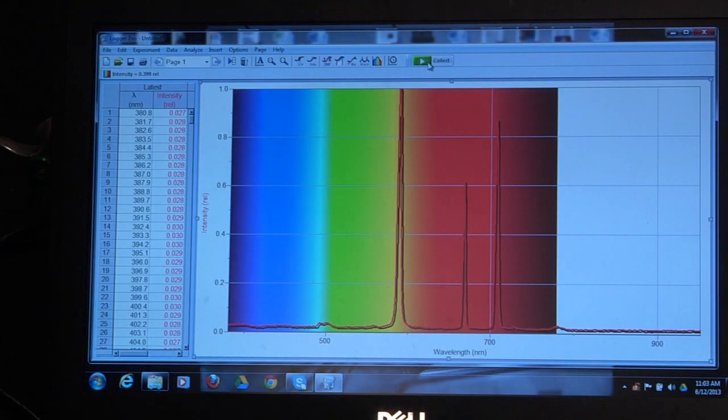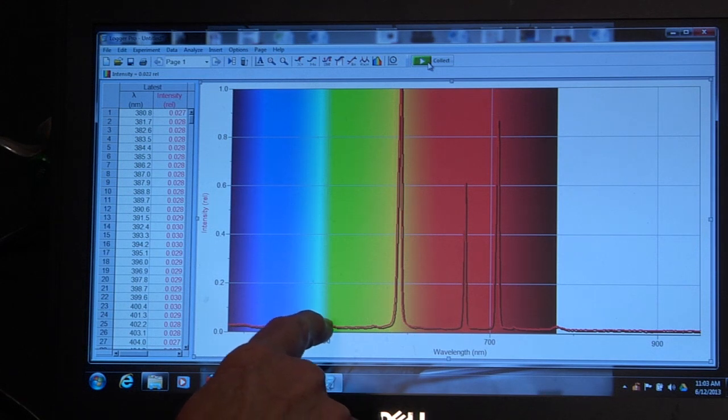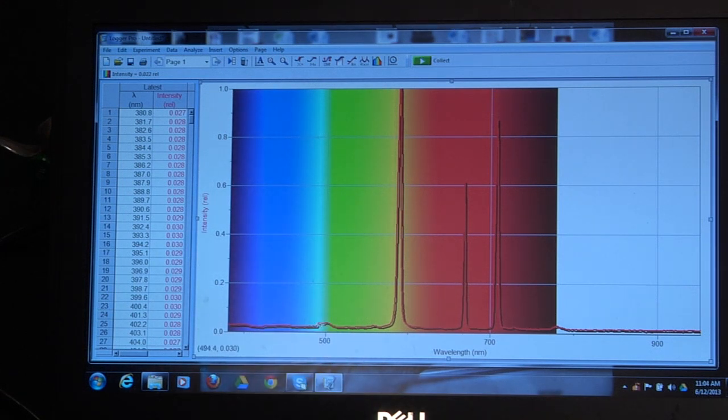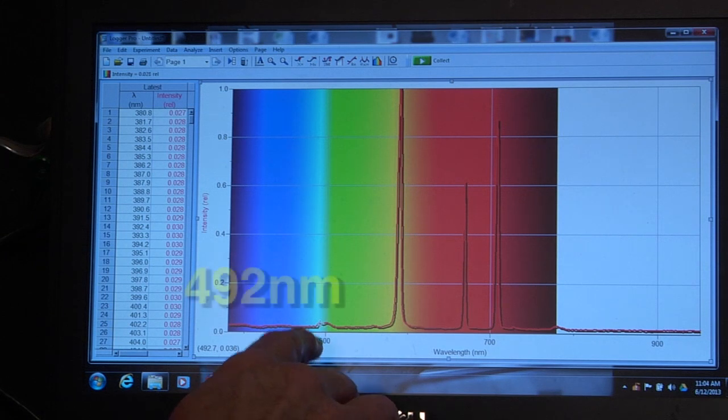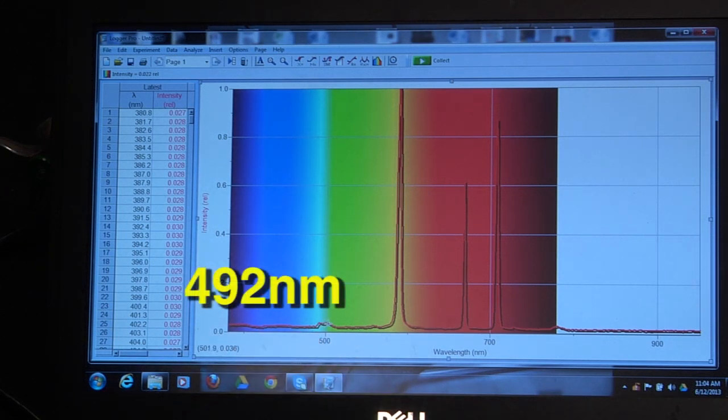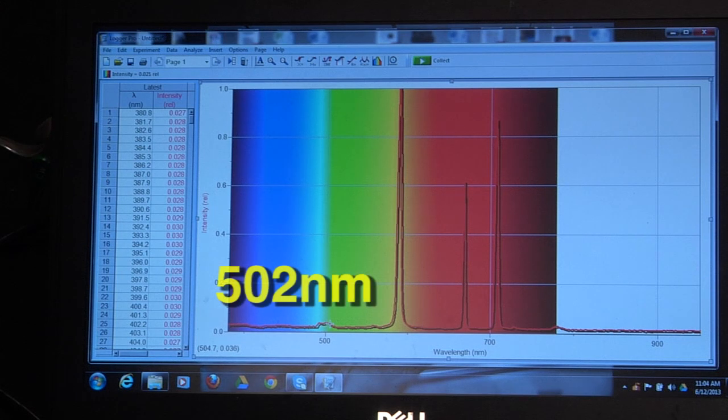What you see here, there are two very faint lines, one at about 492, another one about 502.